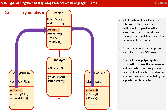With an inheritance hierarchy, you already know that a subclass is able to override a method of its superclass. This allows the coder of the subclass to customise or completely replace the behaviour of that method — we talked about this in part two of our video series. This is a form of polymorphism: both methods share the same name and parameters, but they provide different functionality depending on whether they're implemented by the superclass or the subclass.